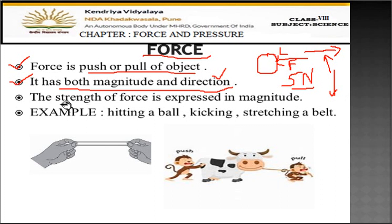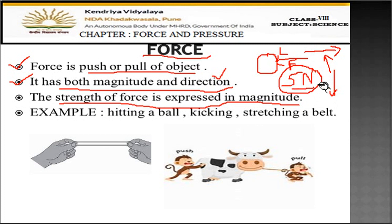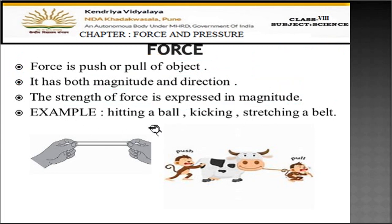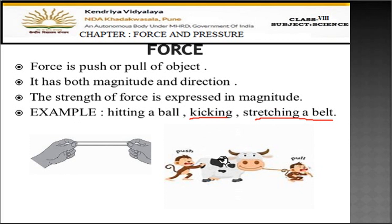The strength of force is expressed in magnitude — how much force is applied on the object. N (Newton) is the unit of force. Every force applied has magnitude as well as direction. For example, hitting a ball, kicking something, or stretching a belt — in all these cases, the force applied has a measurable magnitude and a specific direction.